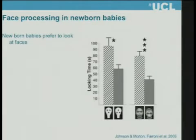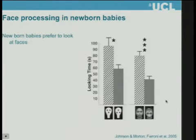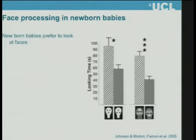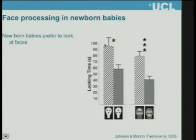Humans are exquisitely social. There's even evidence that we are born with some very basic social abilities, like the ability to detect faces. If you show newborn babies different stimuli — faces or objects, upright faces and inverted faces — so upright cartoons of faces or upside-down cartoons, or real photographs of faces and upside-down photos of faces, and you record how long newborn babies within a few hours of being born look at each stimulus, you find that they prefer to look longer at both cartoon faces and photographs of faces compared to upside-down faces.